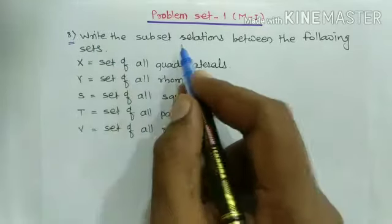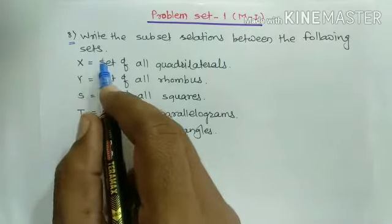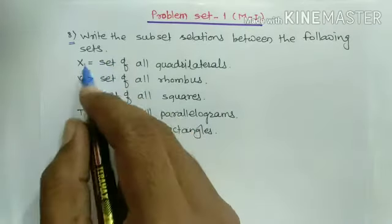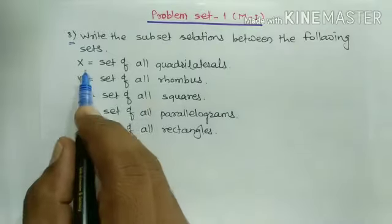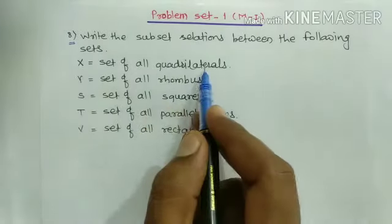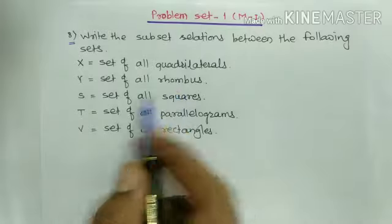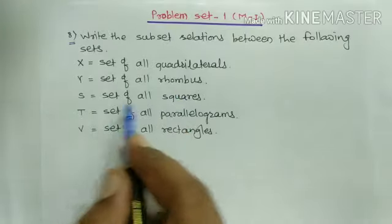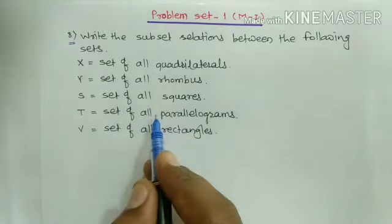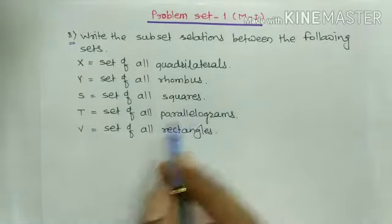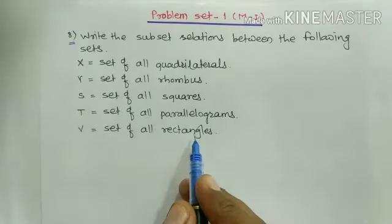See, write the subset relations between the following sets. In the sets there are subset relations. What sets are given? X is the set of all quadrilaterals, Y is the set of all rhombus, S is the set of all squares, T is the set of all parallelograms, and V is the set of all rectangles.